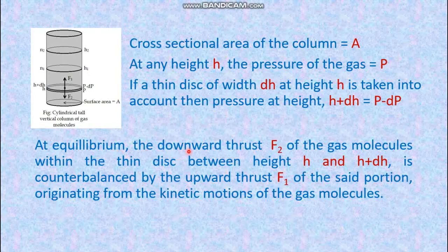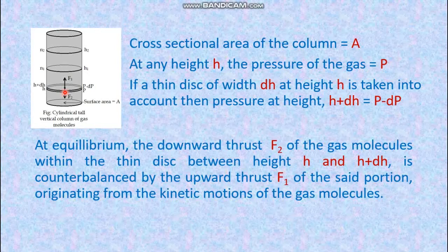The downward thrust F2 is the weight of the gas molecules within the thin disk between height H and H plus dH. This is counterbalanced by the upward thrust F1.